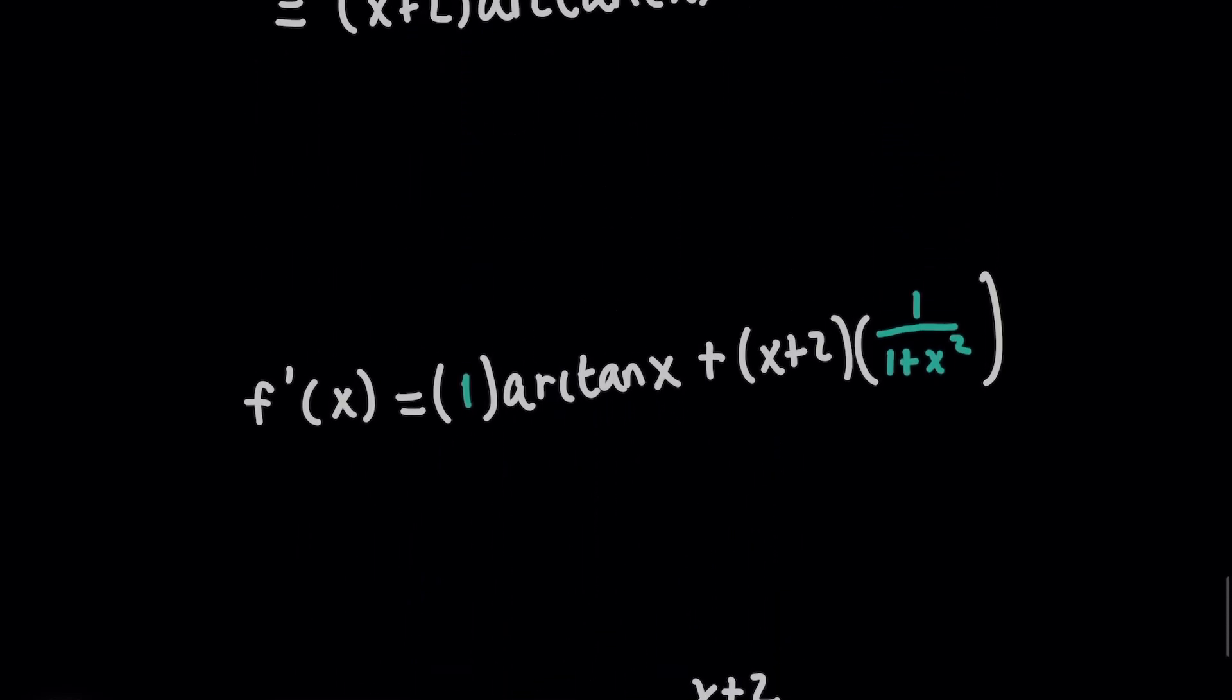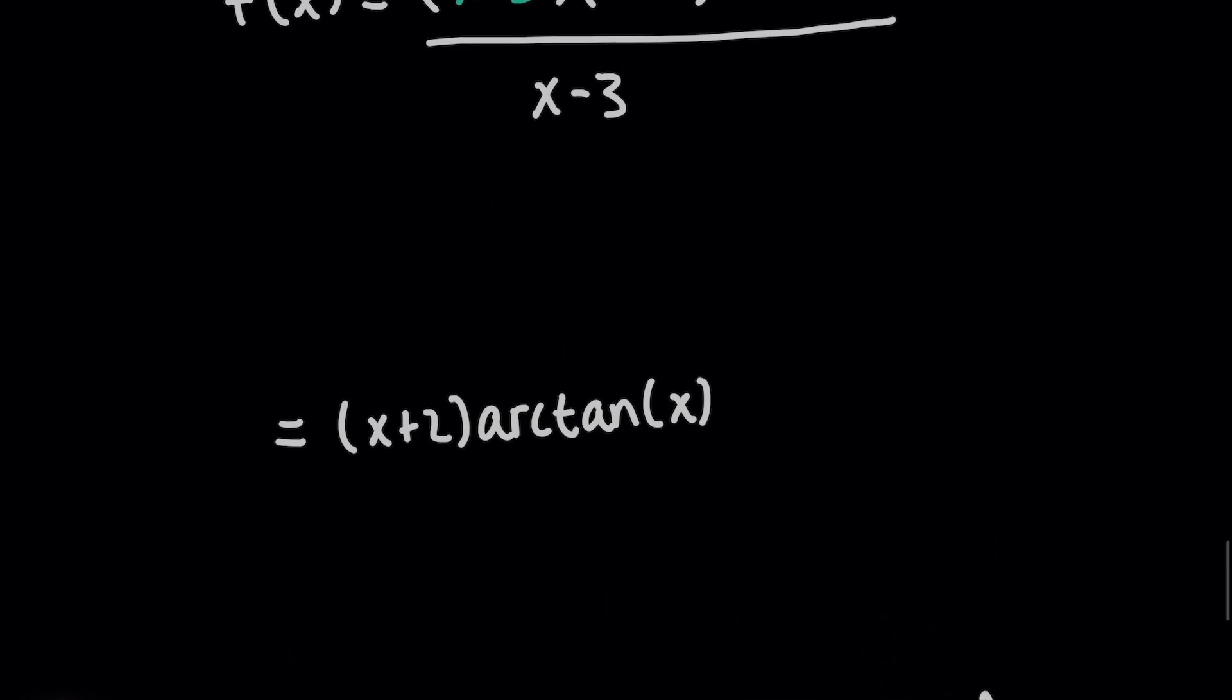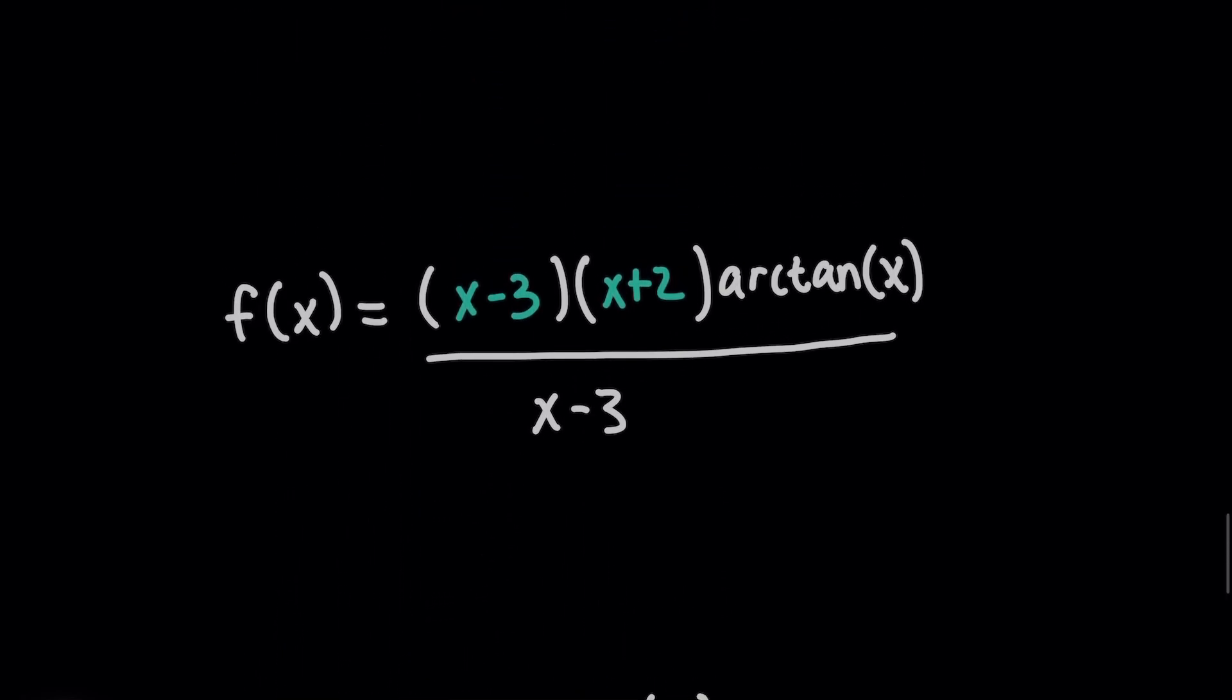And here's the problem. Do you remember how when we did our simplification up here, as I'm scrolling up to show you, we canceled out x minus 3 on the top and bottom here?